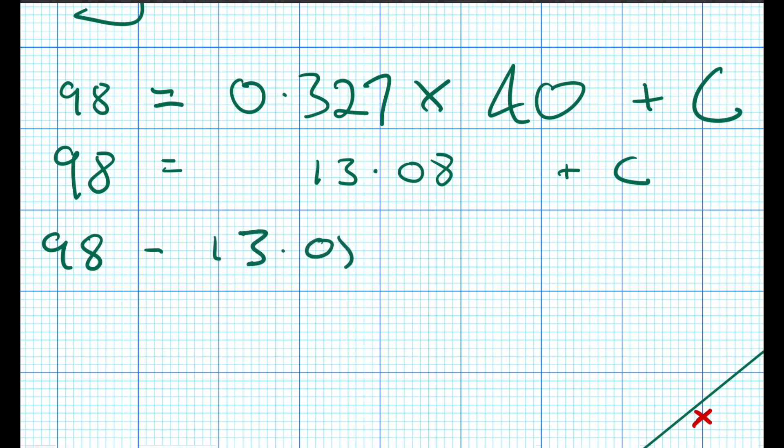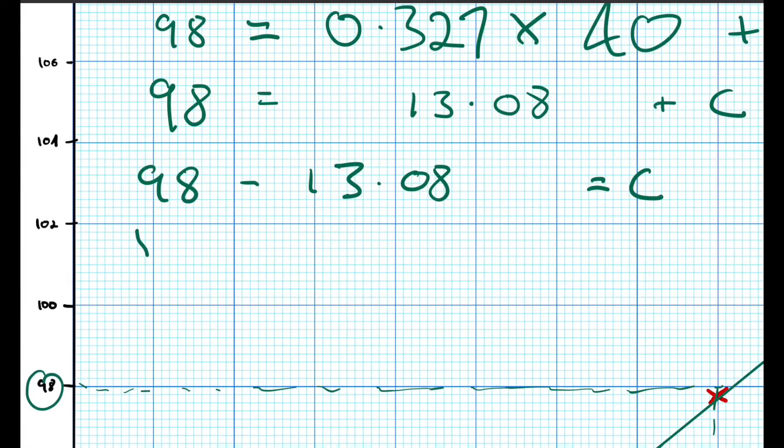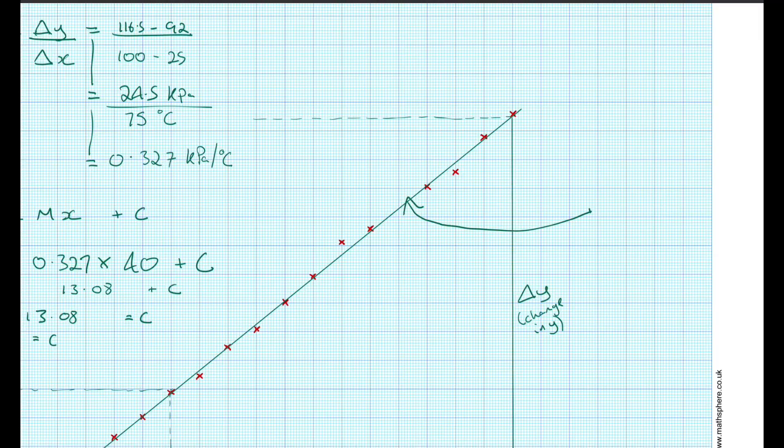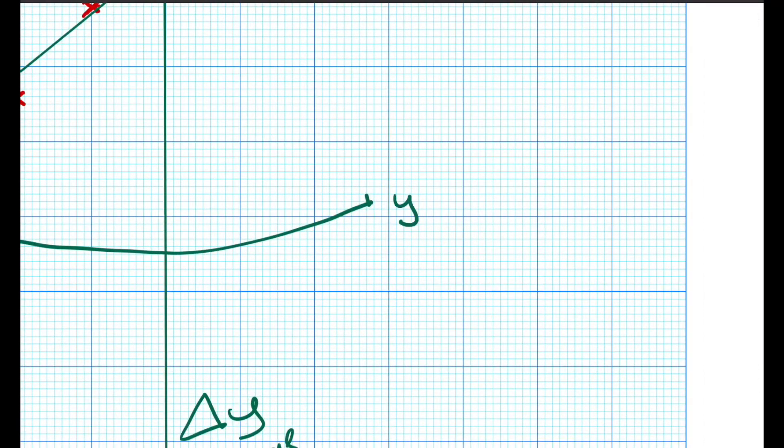That's given us a y-intercept of 84.92 and if you look down at the x-axis it does look like the line would actually intercept at that point. Okay so now we have our equation of our straight line.